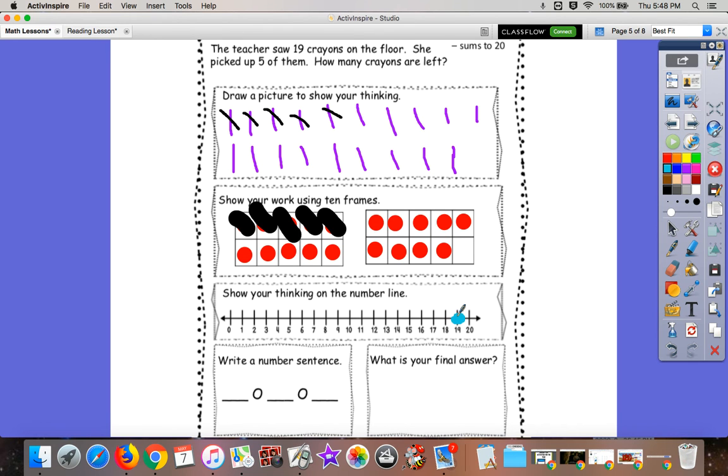Five. So let's make five hops. One, two, three, four, five. And look at that. We came to 14.